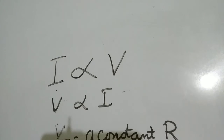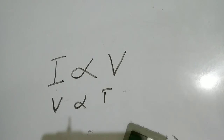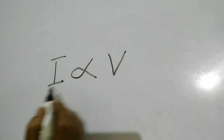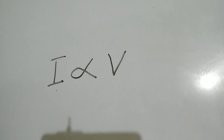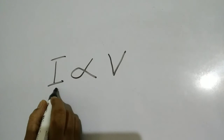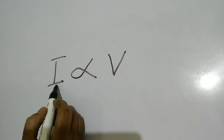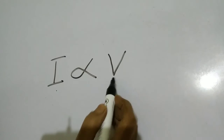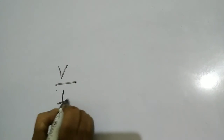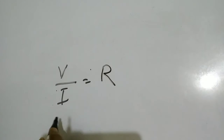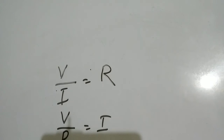This relationship indicates that when the voltage is doubled, the current through the conductor also doubles. When the current is half, the voltage also will be half. That is the relation connecting V and I. We know V by I is equal to R, or V by R is equal to I — that is the relation connecting V, I, and R.